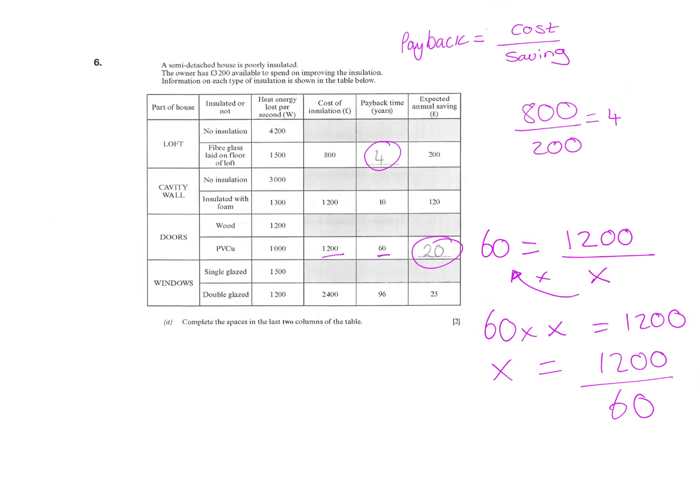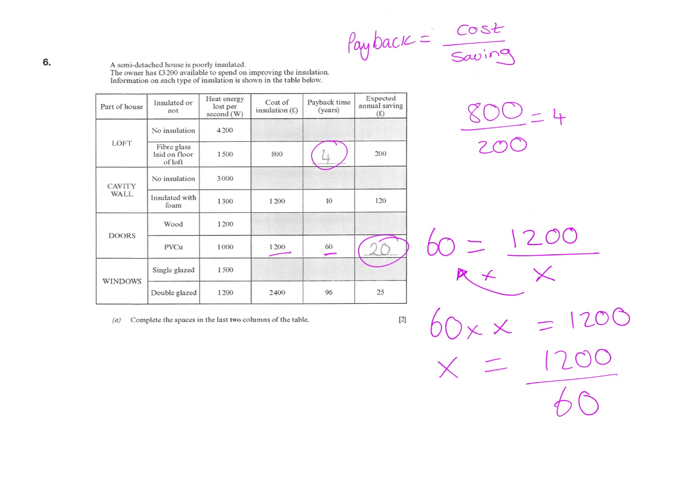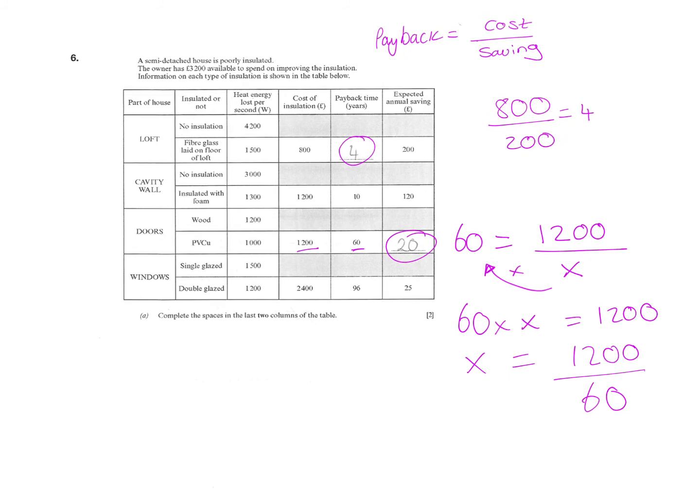The next question is a six mark question, so I'm just going to briefly talk about it on this slide, which asks you to think about which one you would recommend that the homeowner spends his £3,200 on.